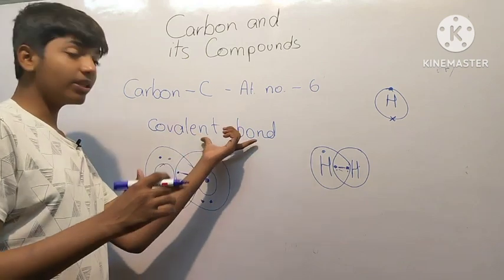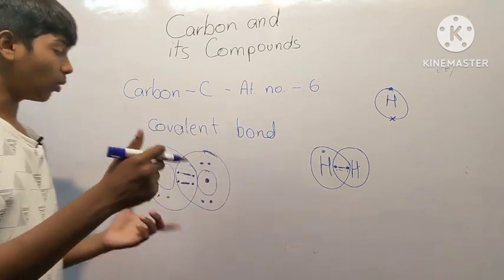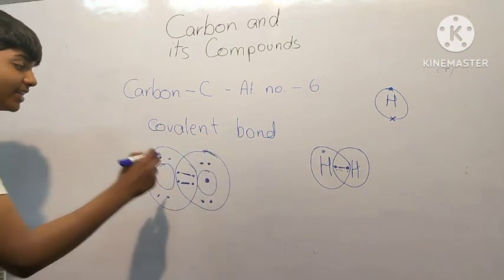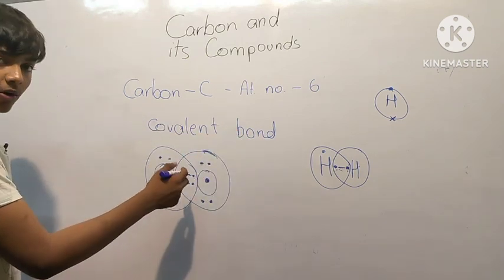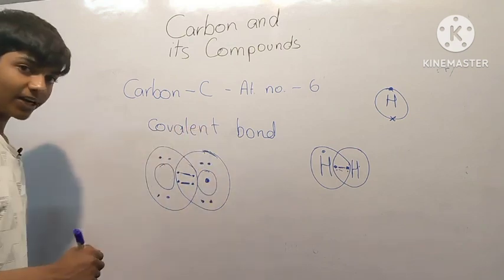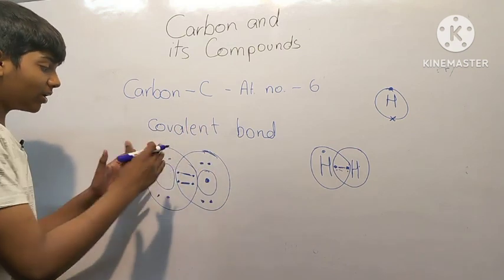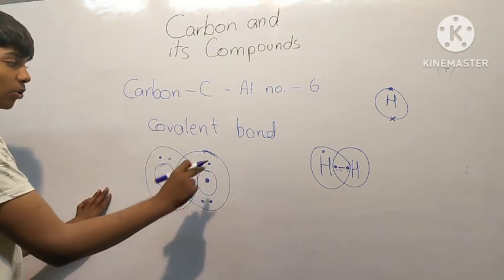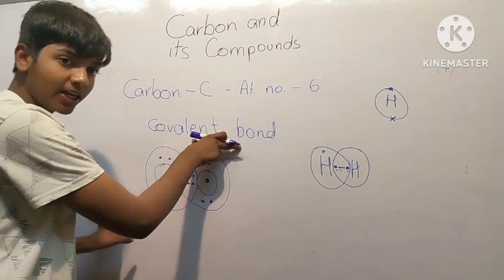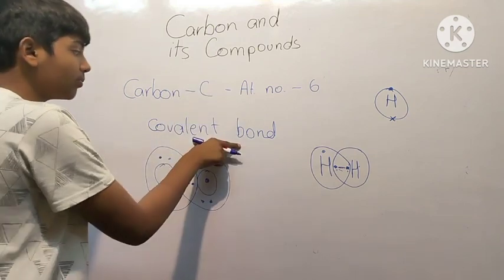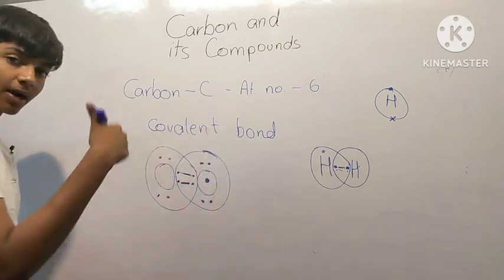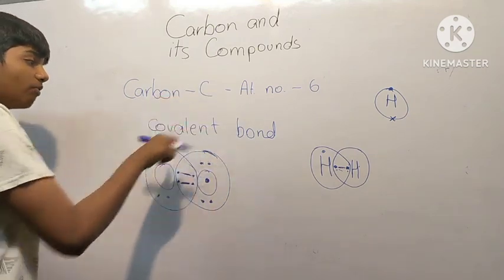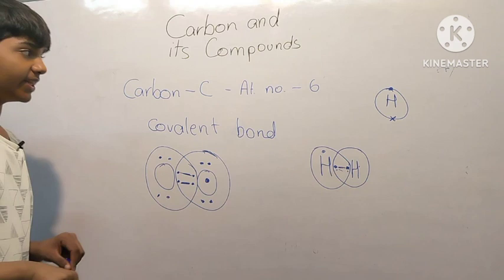The attraction caused by this sharing of electrons is known as a covalent bond, and compounds formed by covalent bonds are known as covalent compounds.